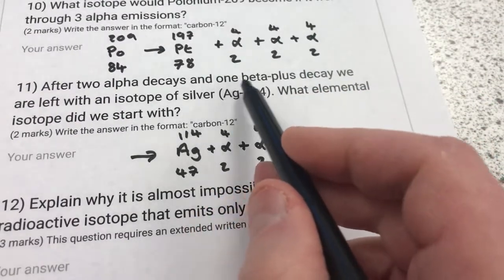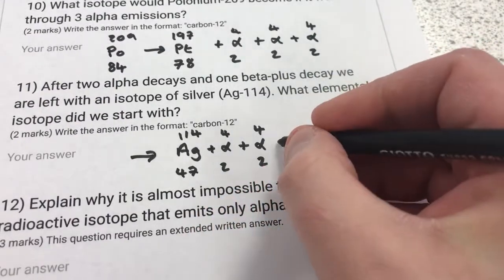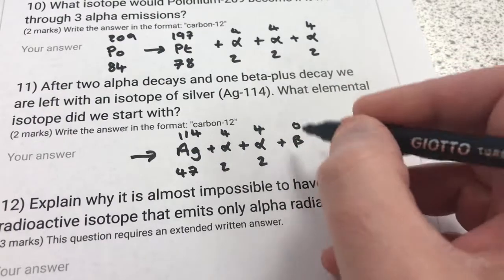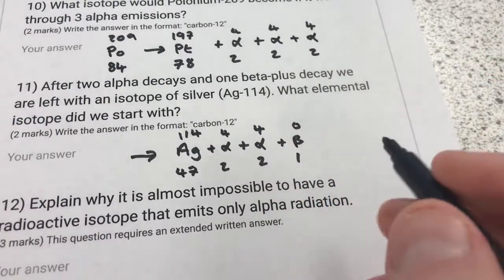And one beta plus decay, so plus beta symbol, no mass, a beta plus decay, so that's going to be the number 1.